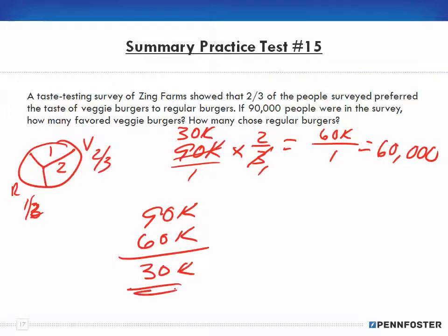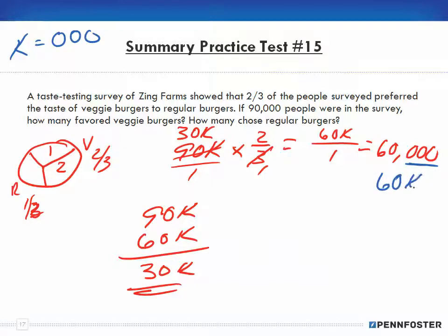Then I can take the 90,000 and subtract the 60,000 to get 30,000 who like the regular burgers. Just remember that the K represents a thousand—three zeros. That's why I wrote 60,000 or 60K. That's a short method accountants use to write larger numbers. So I took two-thirds, came up with the veggie burgers, and the difference gave me the regular.